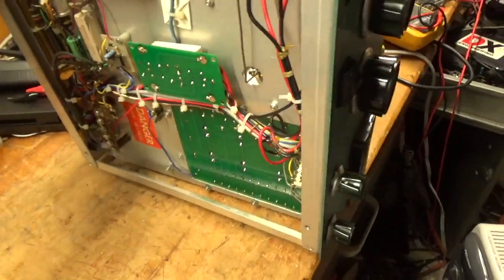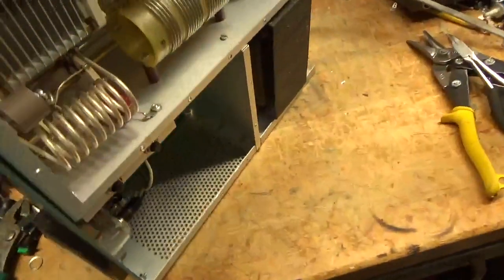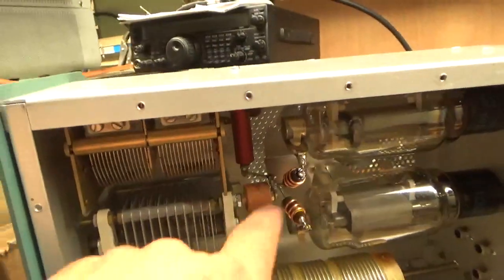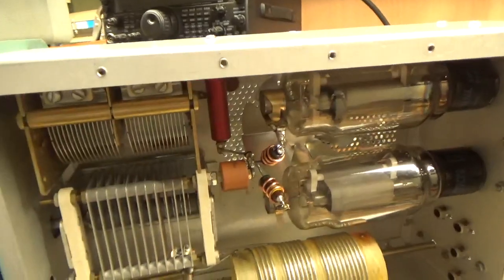Cleaned the rotary switches, deoxid gold, relay with deoxid gold, wound new parasitic suppressors, he provided the plate choke, I'm sorry, a new plate blocker, put the new plate blocker in.